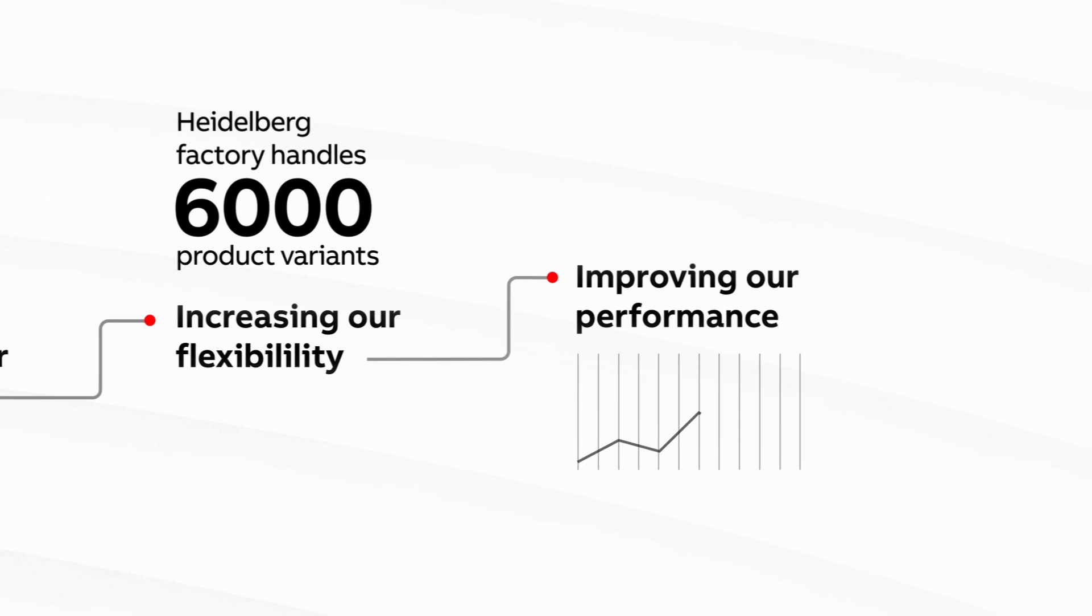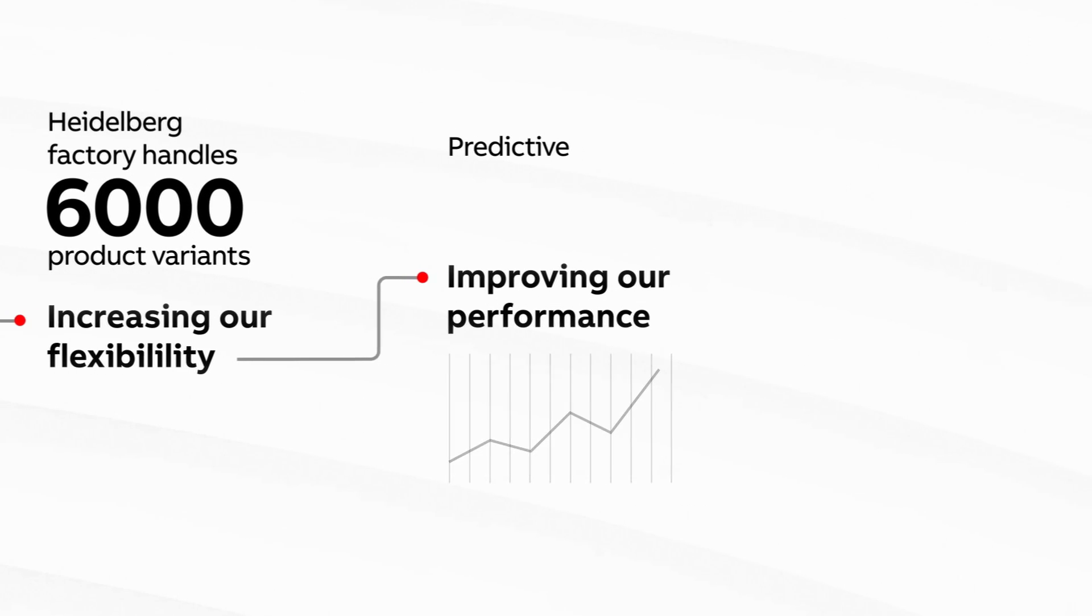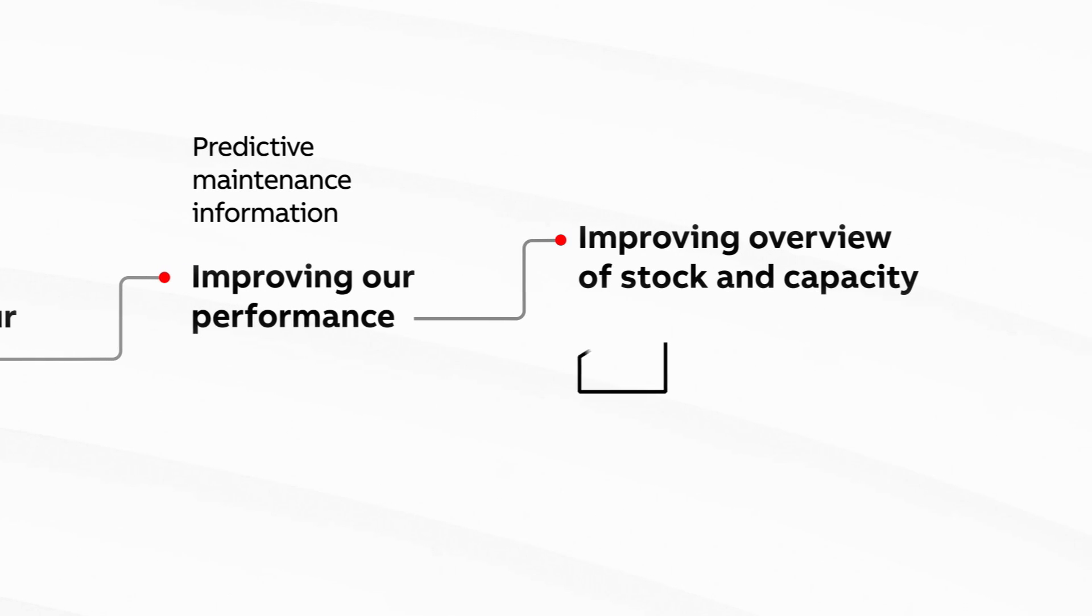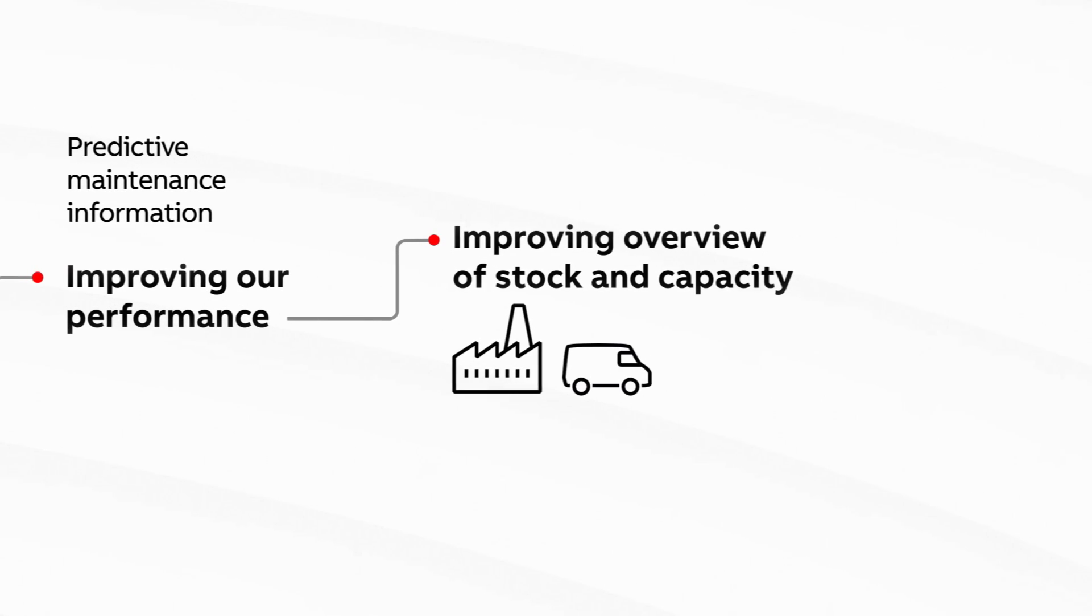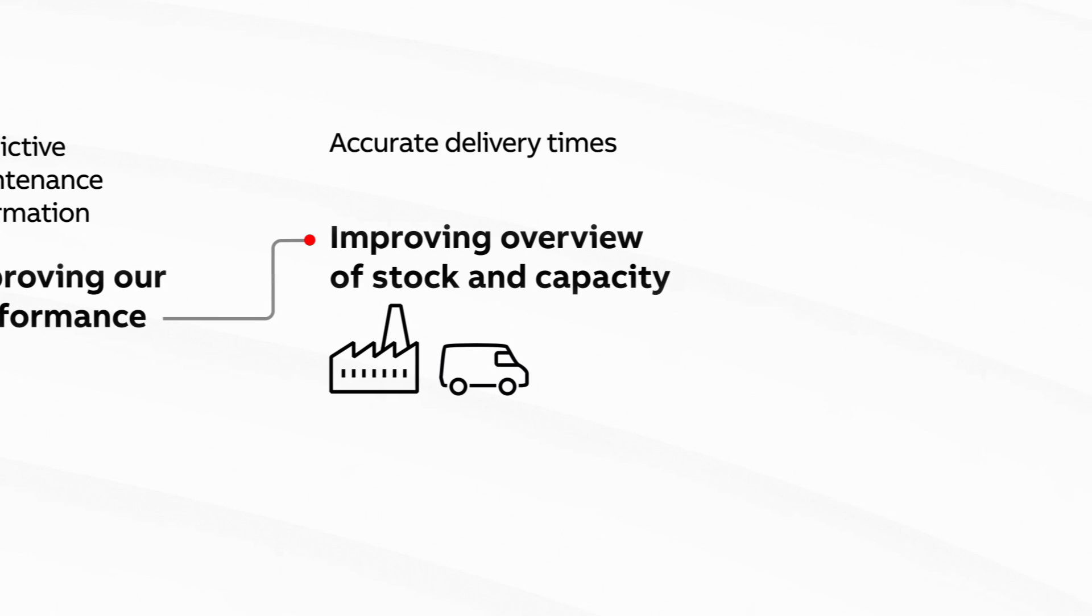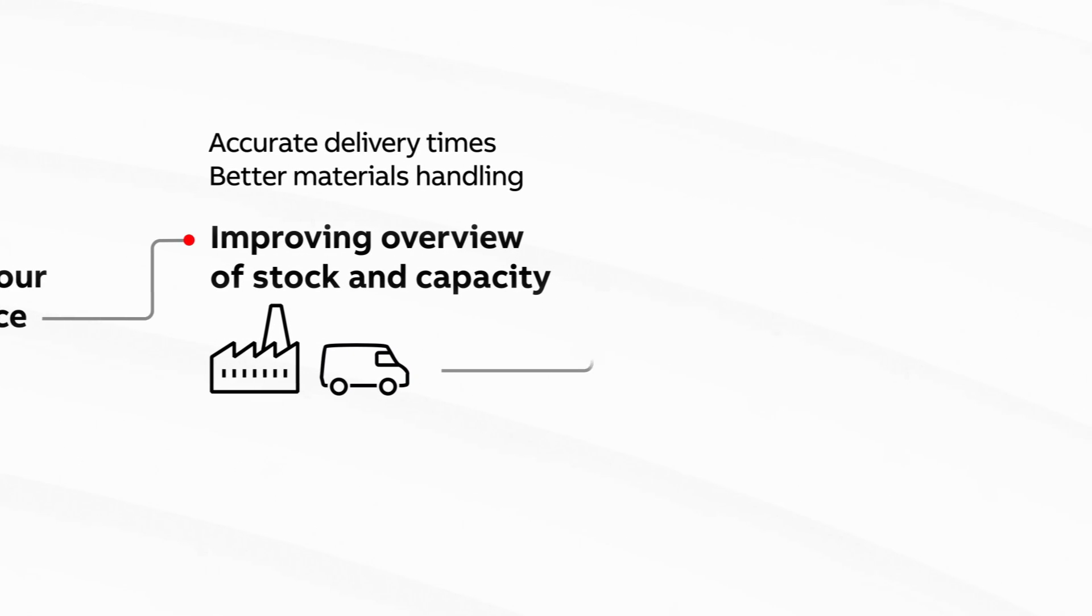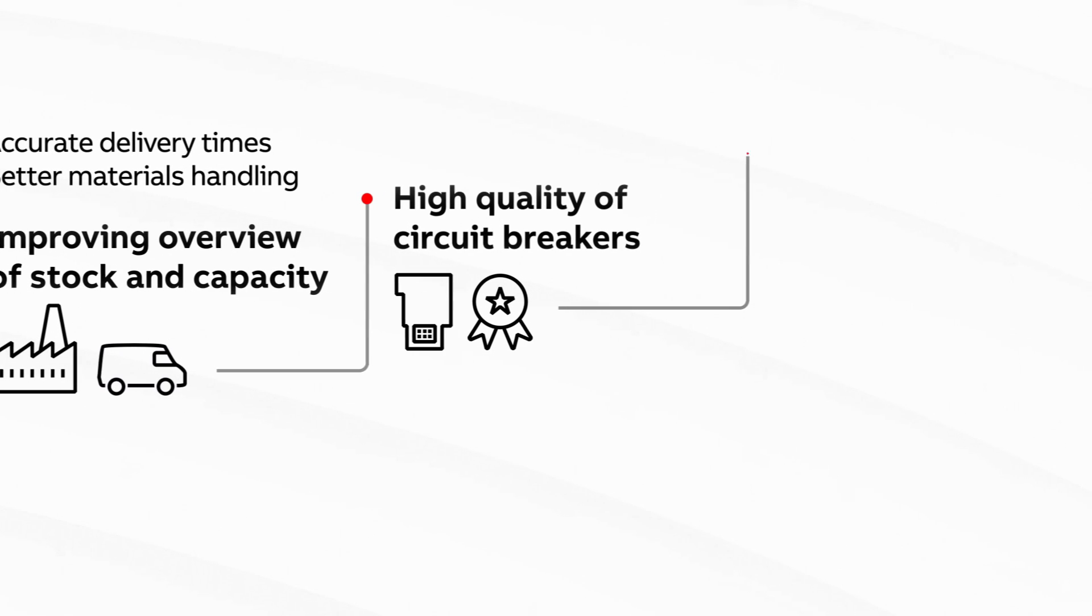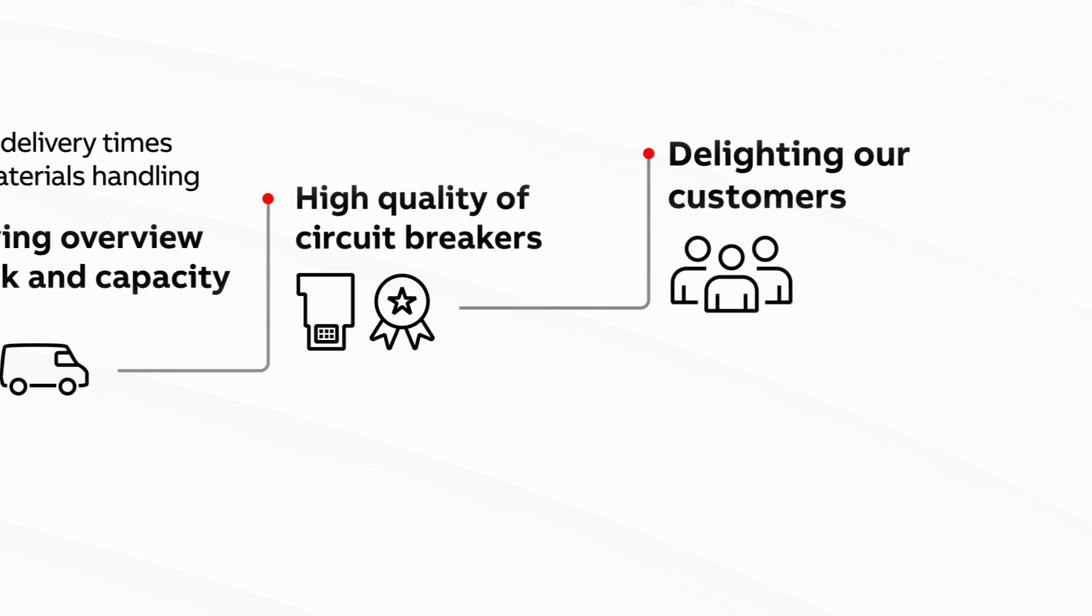Improving our performance as machine sensors provide predictive maintenance information. Improving our overview of stock and capacity, which in turn leads to more accurate delivery times and better materials handling. Maintaining the high quality of our circuit breakers and ultimately delighting our customers.